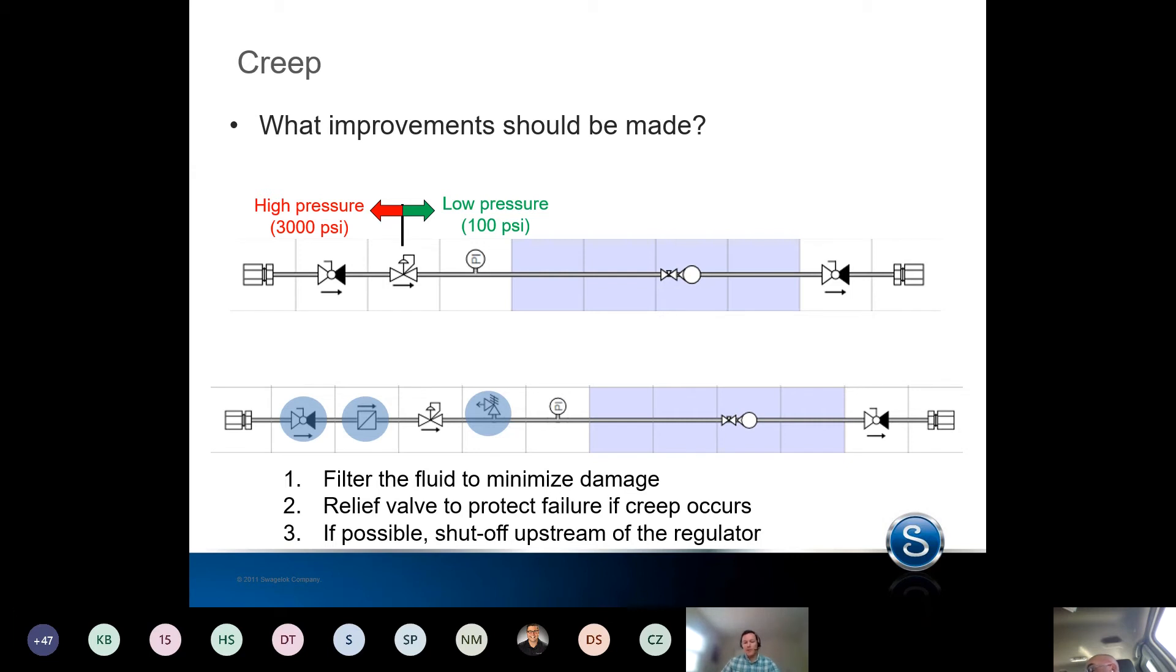And then where possible, shut off upstream of the regulator. It's not always possible, but where you can, that takes all of the shutoff burden away from the regulator.